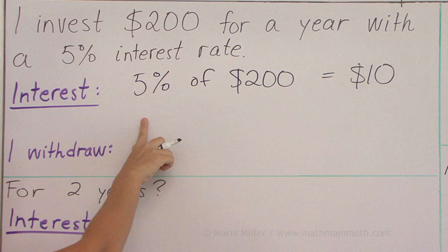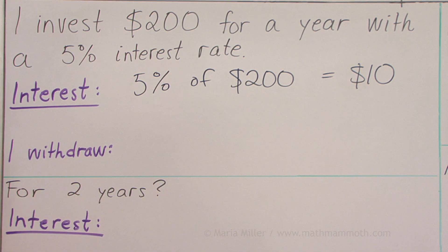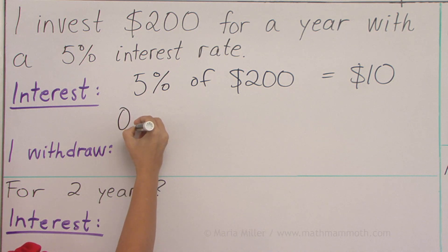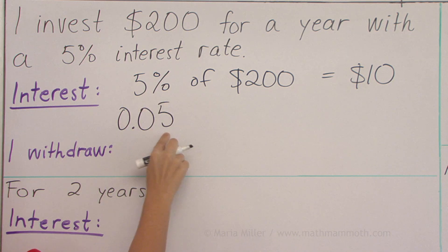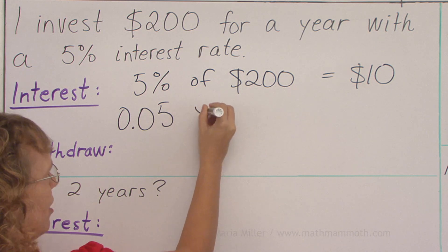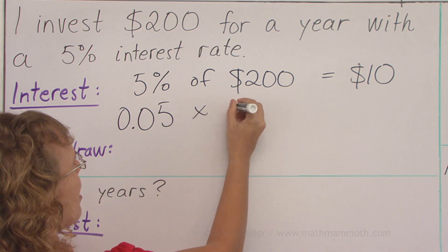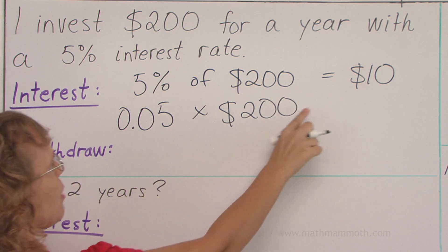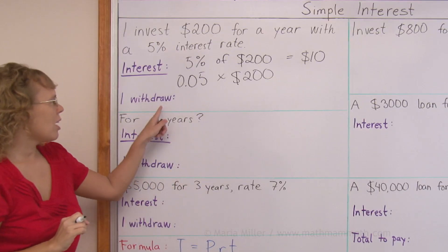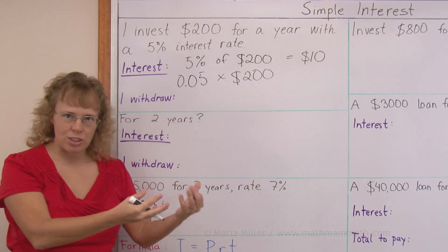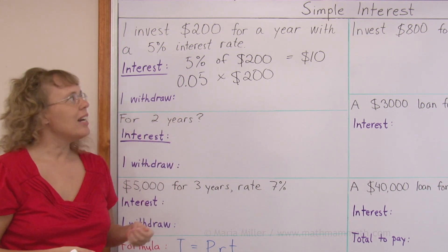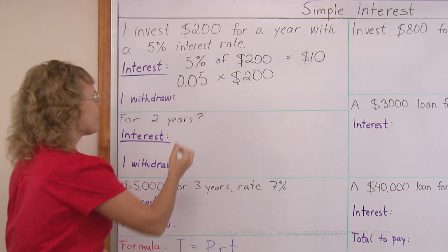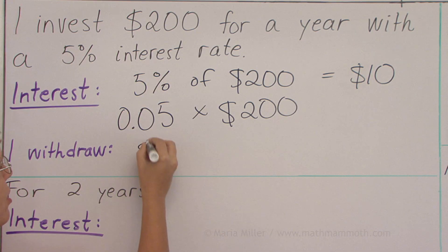I also want to write this expression using decimals. 5% as a decimal would be 0.05 — five hundredths. The word 'of' means times, multiplication, and then we have the $200. If you multiply this, it gives you $10. Now, how much will I get back when I withdraw my principal from the bank? I get the original $200 plus the interest of $10, so I withdraw $210.